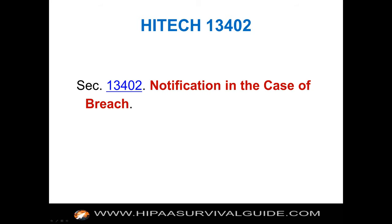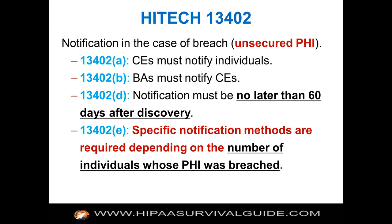Notification in general must be no later than 60 days after discovery. Section 13402E specifies that notification methods are required depending on the number of individuals whose PHI was breached. Section 13402F states the notification must contain specific content. And Section 13402H contains the definition of unsecured PHI, which means PHI that's not secured through encryption and/or destruction — but not any old encryption and not any old destruction — as provided by HHS guidance. The methods must render the PHI unusable, unreadable, or indecipherable.